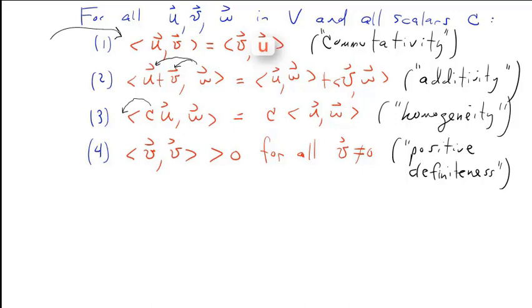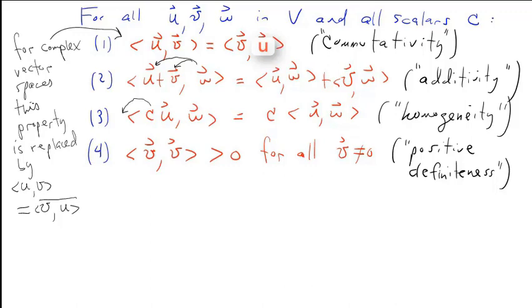I want to point out that property one for complex vector spaces is replaced by: the inner product of u and v equals the complex conjugate of the inner product of v and u. That is, when you switch the order, you have to take the complex conjugate.